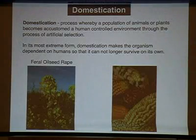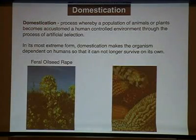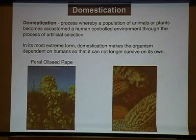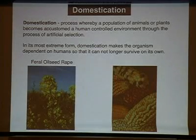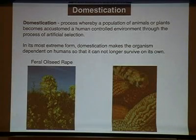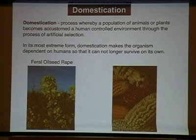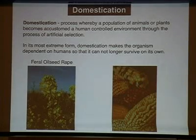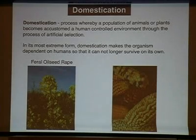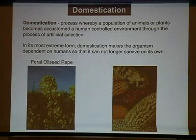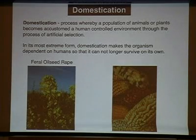Domestication is the process by which plants or animals become adapted to the human-controlled environment through artificial selection. There's a whole range of possibilities: some crops like oil seed rape are only moderately domesticated and can go feral. At the other extreme is corn, which is entirely dependent on humans for its propagation — if humans went extinct, corn would soon follow, with no surviving plants within a few years.